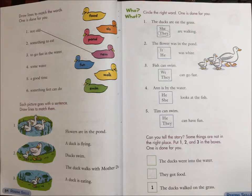Who, what? Circle the right word. 1. The ducks are on the grass. She or they are walking. 2. The flower was in the pond. It or he was white.